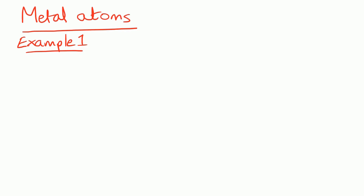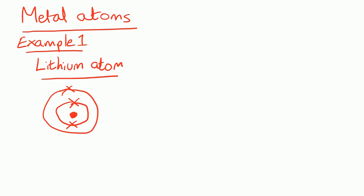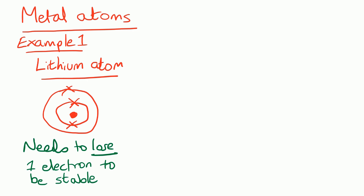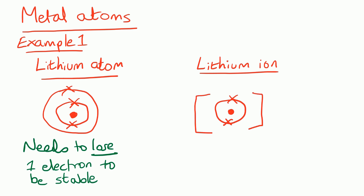Now let's look at metal atoms turning into ions. Lithium has an atomic number of three: two electrons on the first shell and one on the outer shell. Rather than gaining seven electrons, it loses one — always choose the option involving the least number of electrons transferred. After losing that one electron, we draw the lithium ion, which is left with a full outer shell.